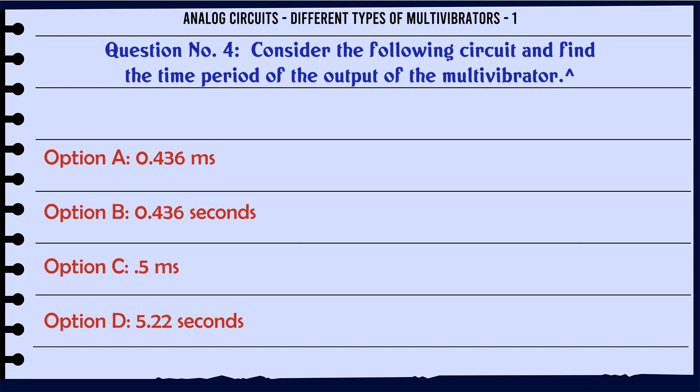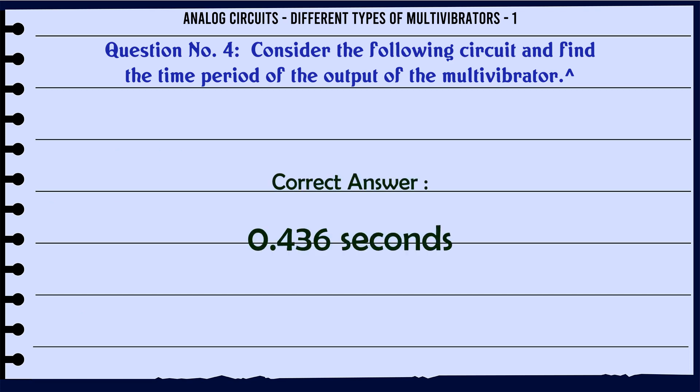Consider the following circuit and find the time period of the output of the multivibrator. A: 0.436 ms. B: 0.436 seconds. C: 0.5 ms. D: 5.22 seconds. The correct answer is 0.436 seconds.